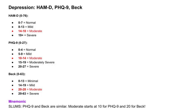The Beck Depression Inventory is a self-report measure scoring from 0 to 63. 0 to 13 is minimal depression — some sadness, but generally within normal limits. 14 to 19 is mild depression — symptoms are noticeable but not debilitating. 20 to 28 is moderate depression — functioning may be impaired and treatment is often recommended. 29 to 63 is severe depression, suggesting significant distress and a strong need for professional support.